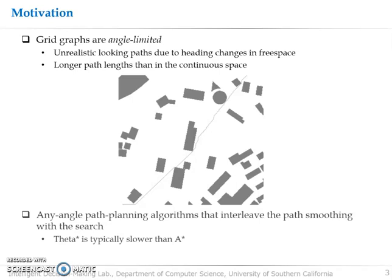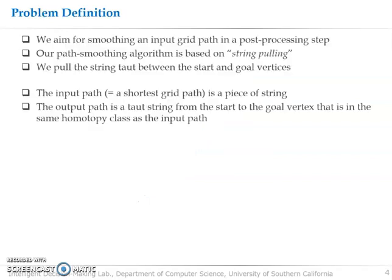So in this paper, what we aim for is to obtain the path in blue given an input grid path. We use A star's shortest grid path as an input grid path and implement the path smoothing in a post-processing step. The concept here for path smoothing is string pulling. We think of the input grid path as a piece of string and try to pull the path as taut as possible from start and goal vertex.